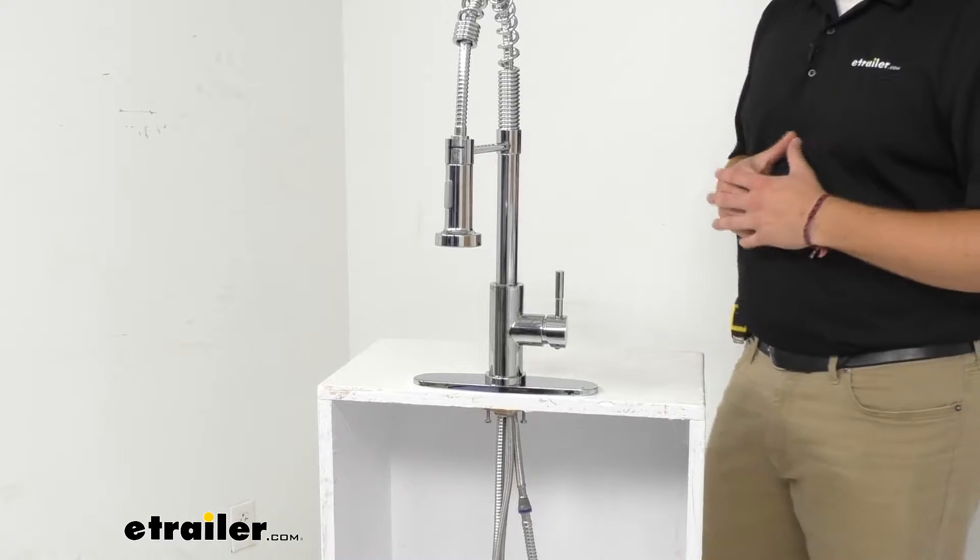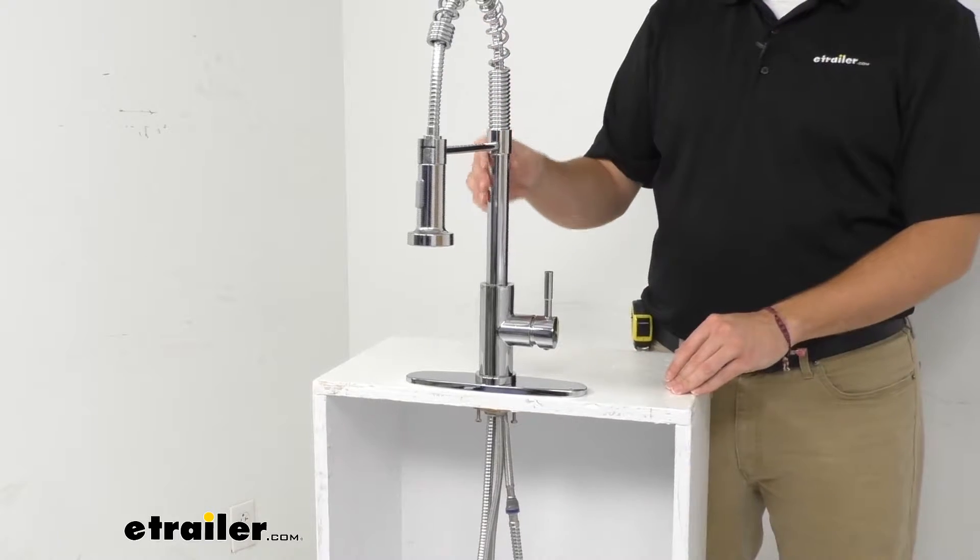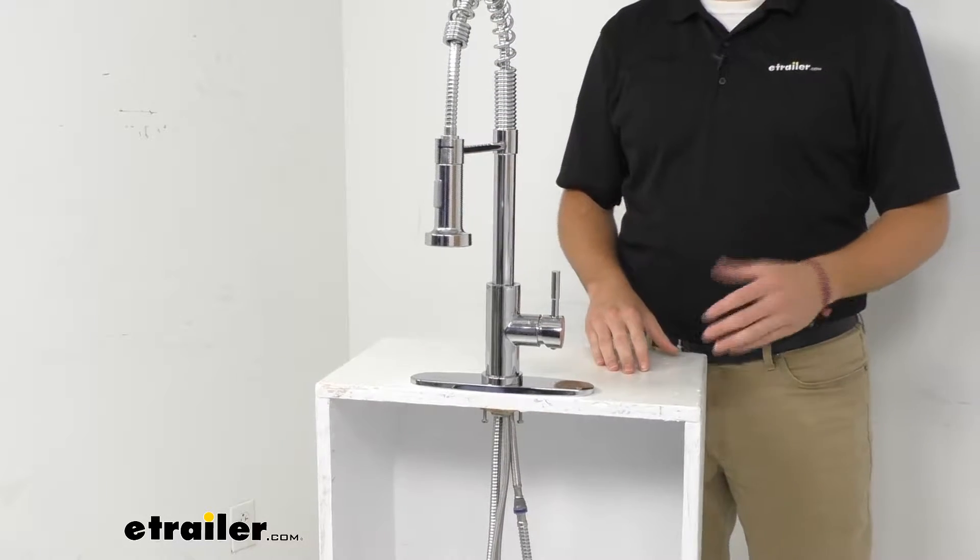Hey everybody, welcome to eTrailer.com. I'm Bobby, and today we're taking a look at the Empire Faucet Stainless RV Kitchen Faucet with Hammer Style Pull-Down Spout.